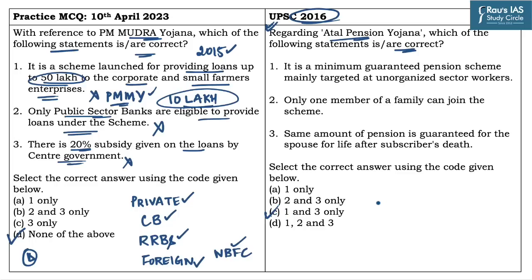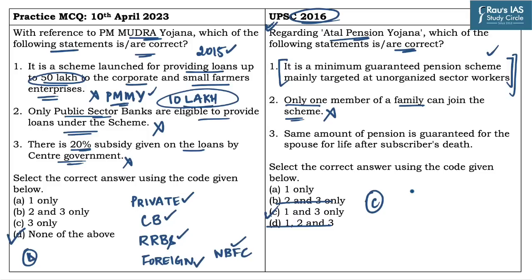The answer to the Atal Pension Yojana question is C (1 and 3 only), because the second statement — that only one member of a family can join the scheme — is incorrect; there is no such restriction. Whenever you come across scheme-related questions, apply common sense and try to eliminate trap statements. It is difficult to memorize all provisions of a scheme, so a common-sensical approach helps in Prelims.